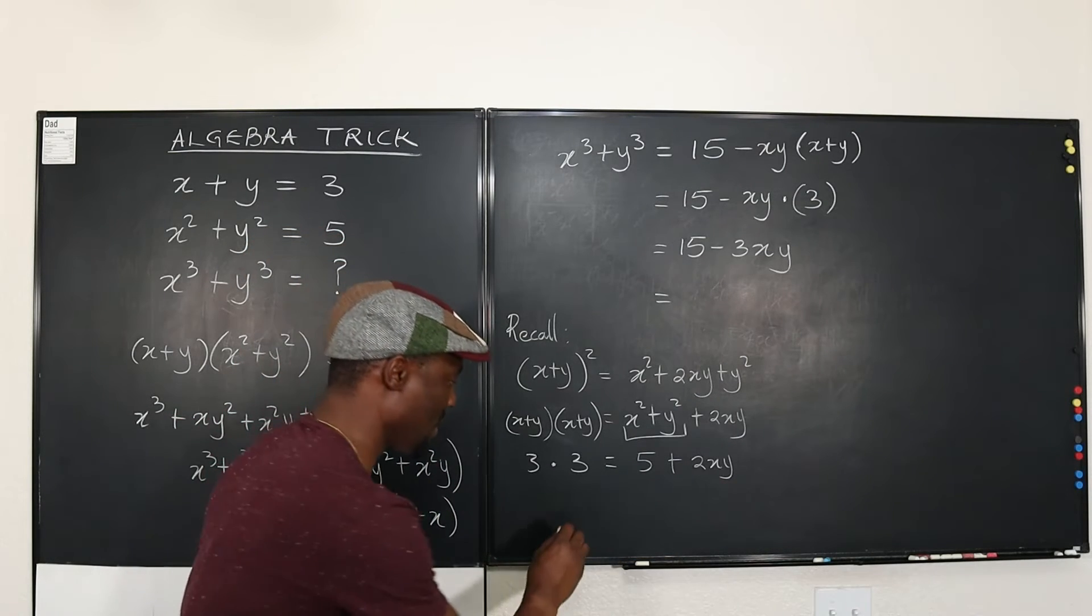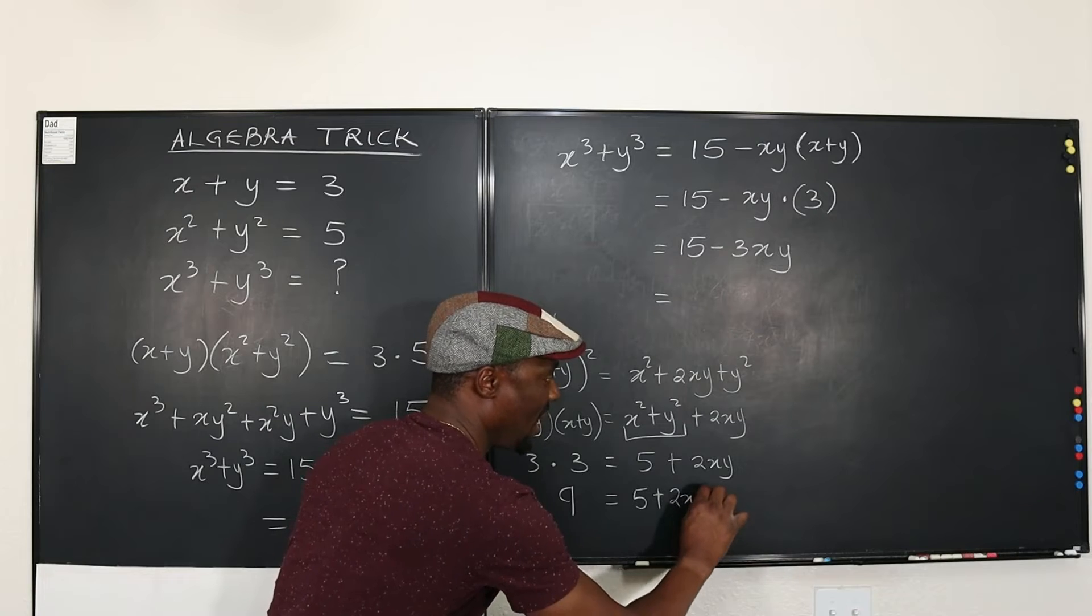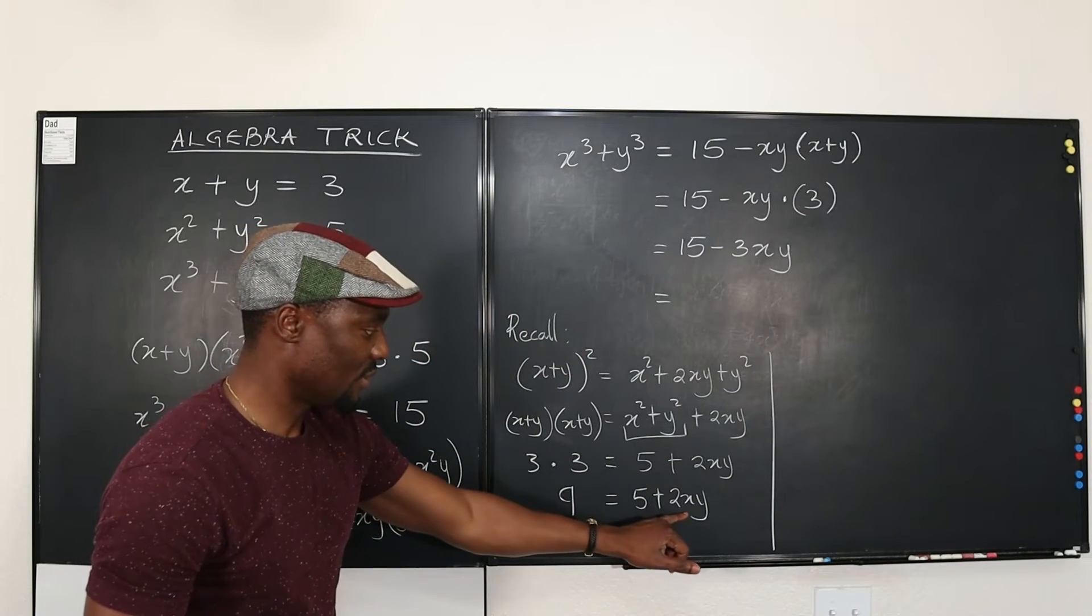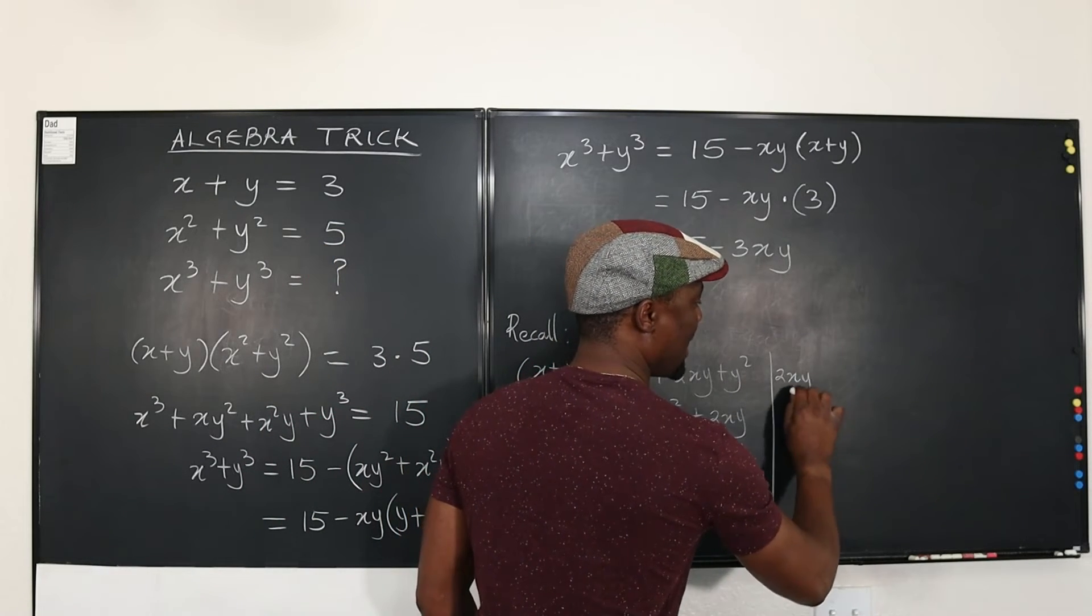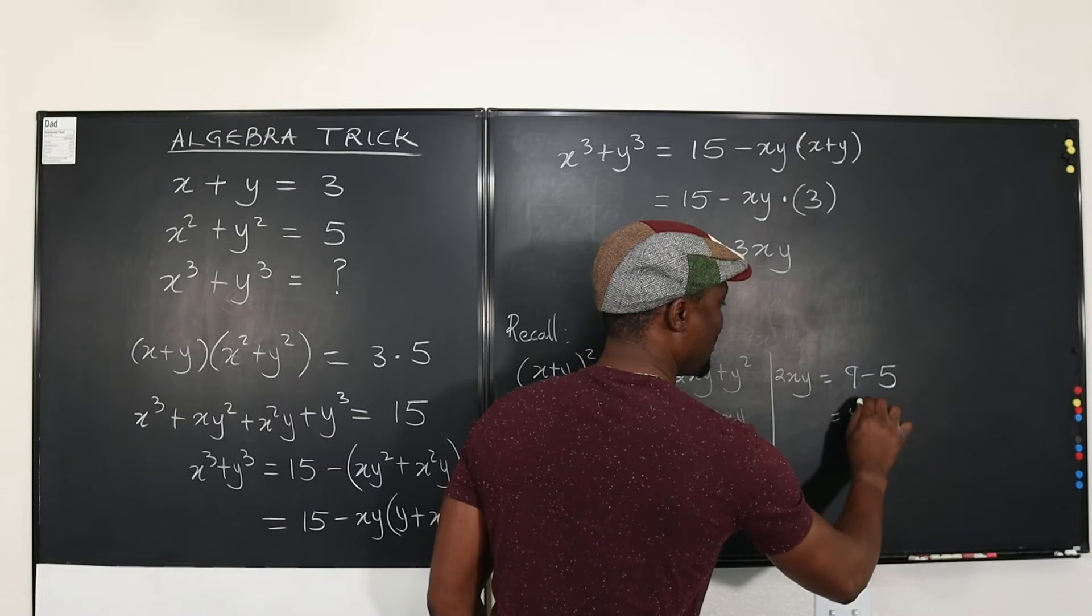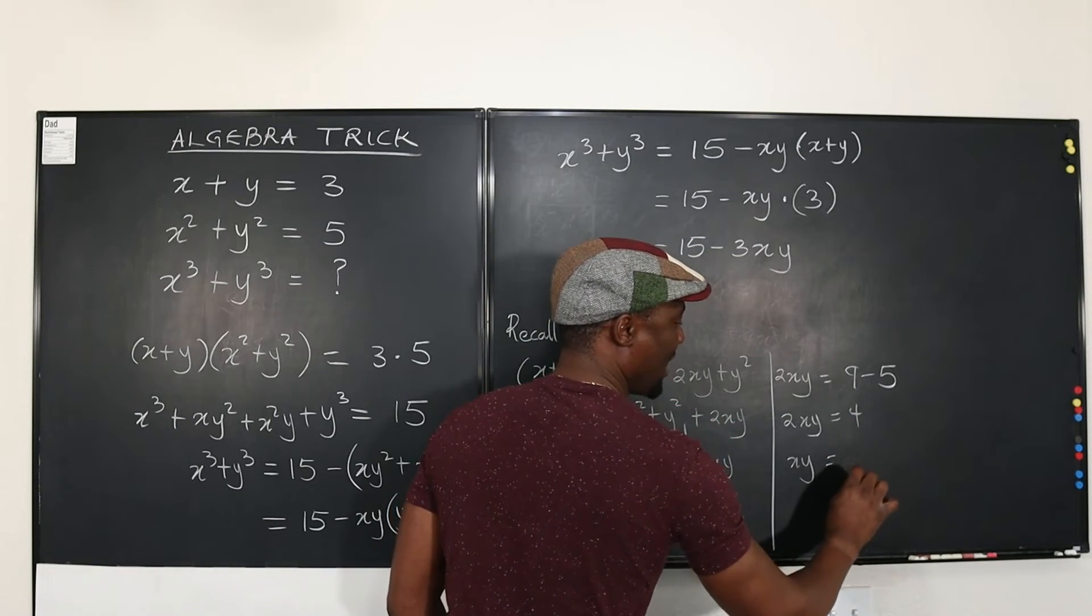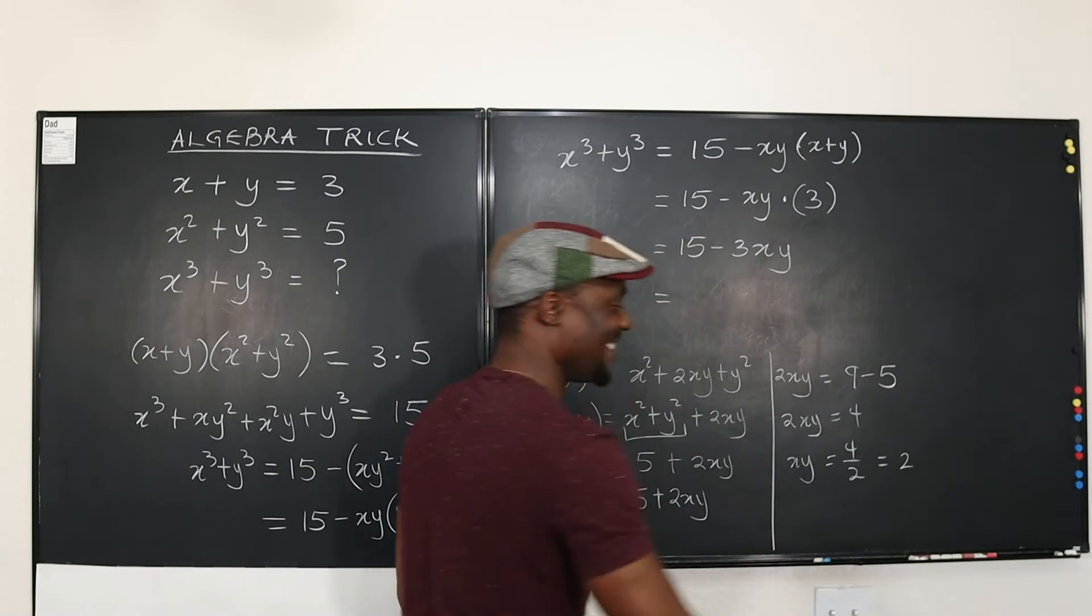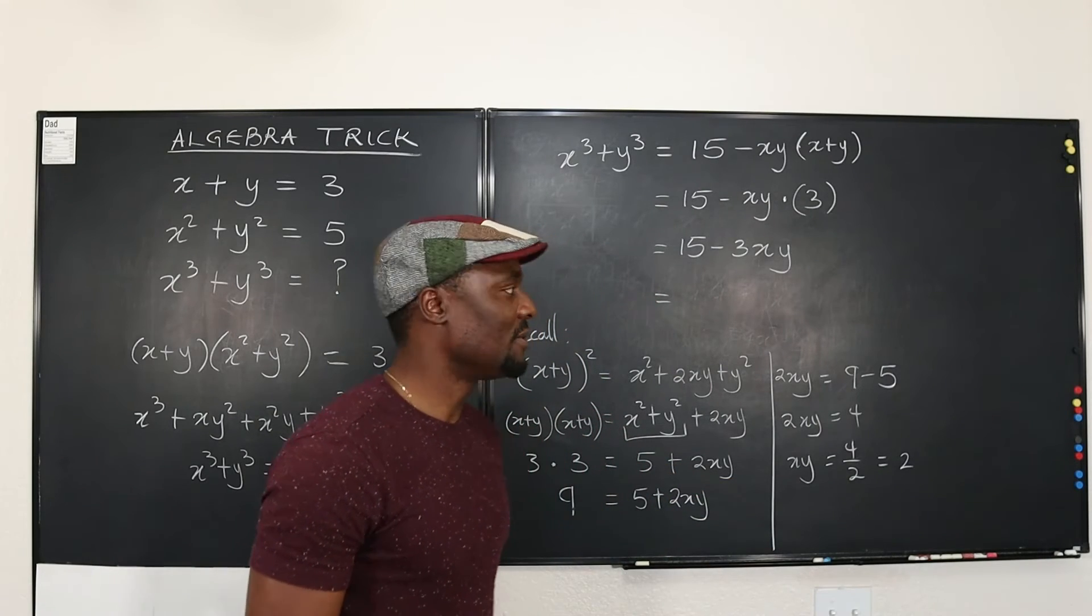Well, if nine, well, we have nine equals five plus 2XY. That tells me that my 2XY is nine minus five. So I have 2XY equals nine minus five, which is equal to four. Okay? So XY is what? It's four divided by two, which is equal to two. So neatly, I've gotten XY to be two.